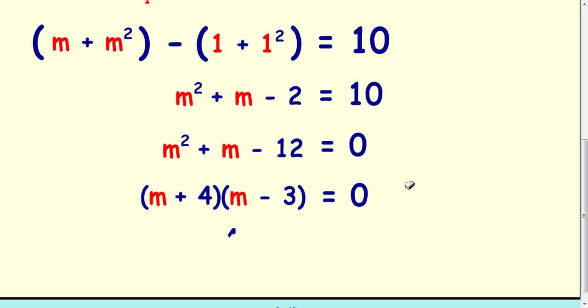So (m + 4)(m - 3) equals 0. This bit will give us 4m, and take away 3m here will give us the m here. So m can be negative 4 or 3.